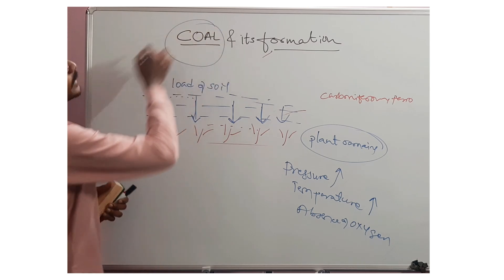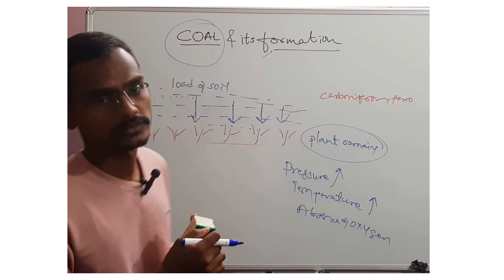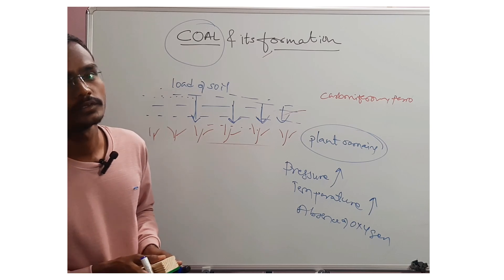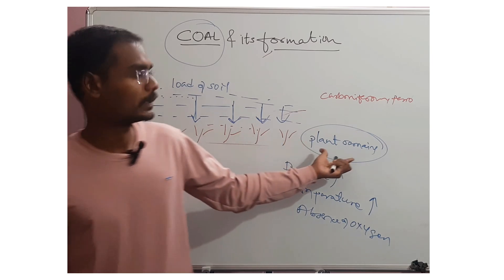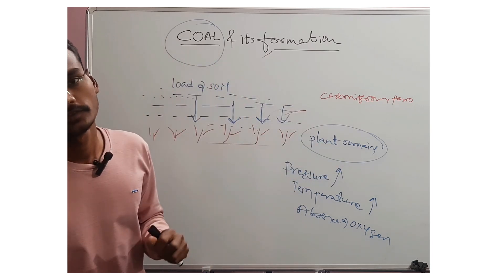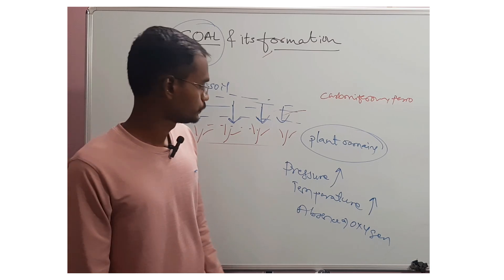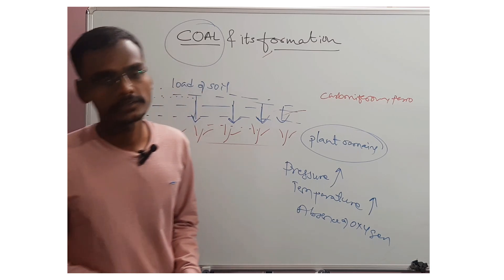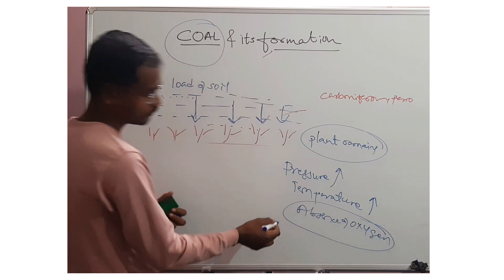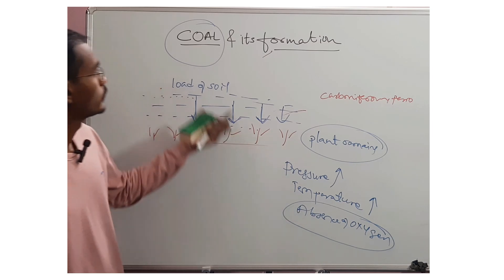What we are getting now, what we are using and consuming now for our needs — this is the mechanism that converted plant remains, plant debris, into coal. This is the formation of coal. I hope this is clear to you. One more thing I need to add: the absence of oxygen was so essential in the formation of coal.